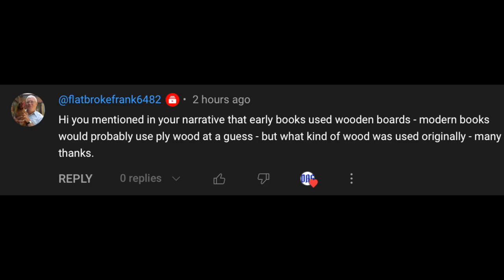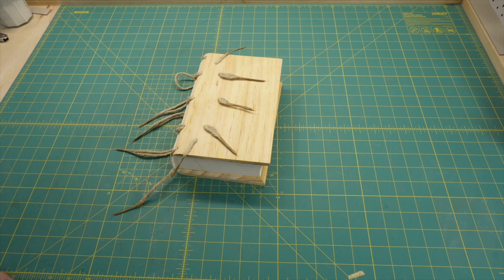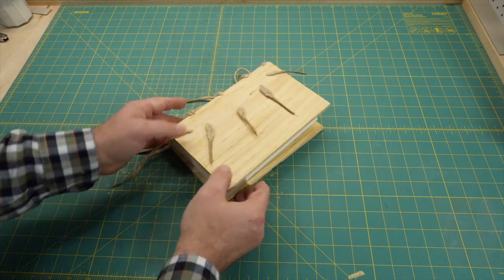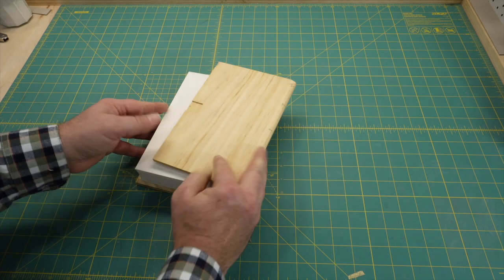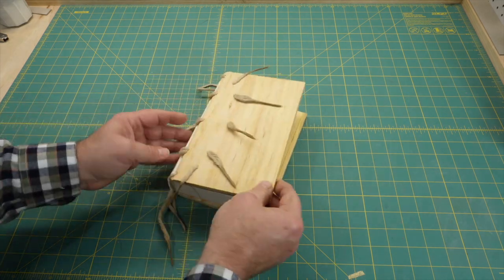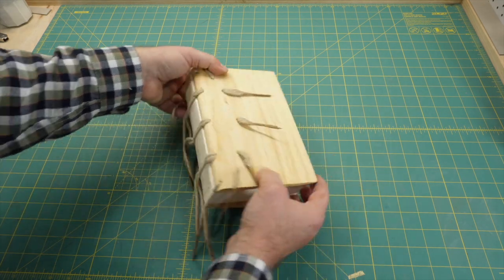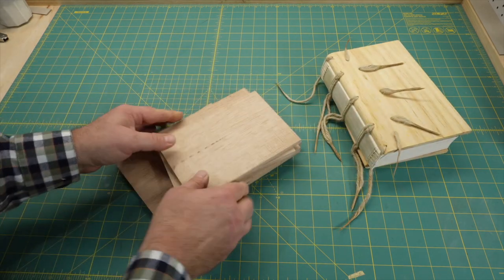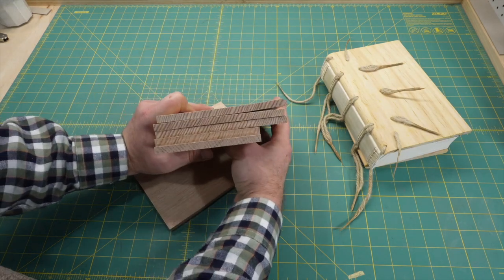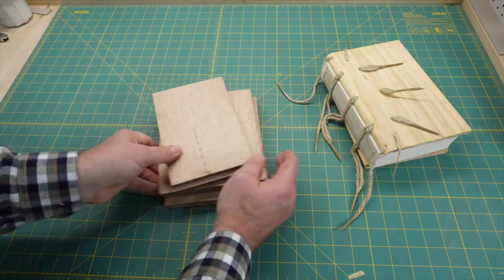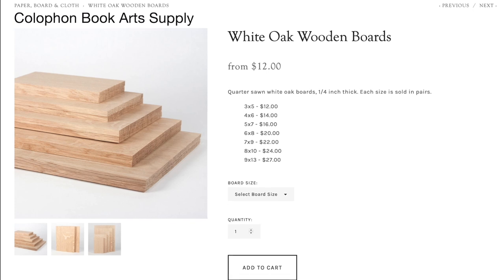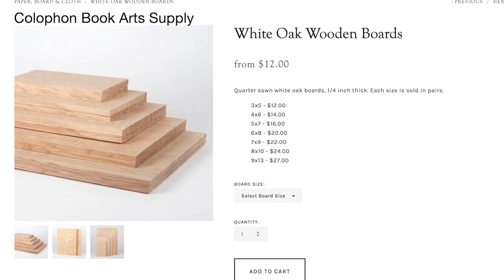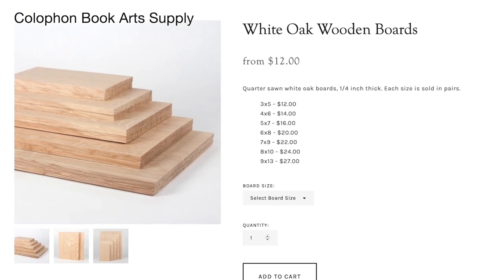The next question is about what type of wood was used in early bindings. Well modern boards are made of pulp board, generally known as binders grey board or mill board. Early books with wooden boards generally used what wood was locally available, and sometimes there's clear evidence that specific types of wood were favoured because of suitable qualities such as it doesn't split or warp. In Western Europe, oak and beech were common, and it was probably split quartered, which reduced splitting and warping.